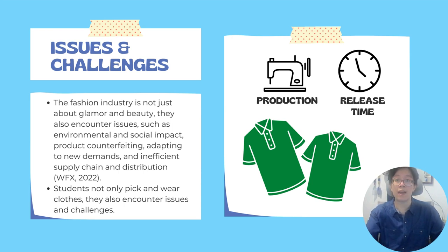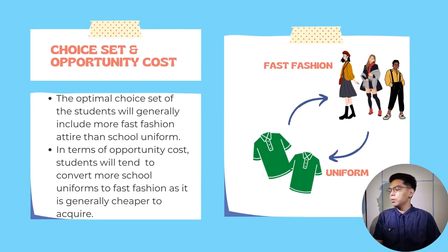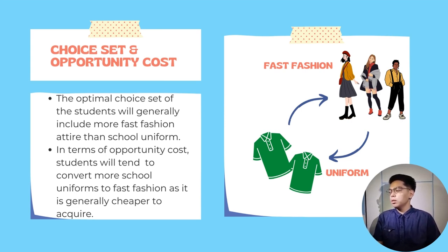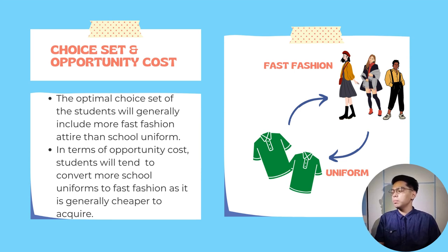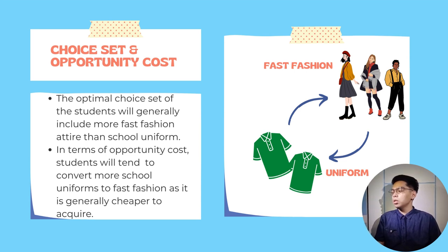In examining the choice set and opportunity cost of fast fashion versus school uniforms, we found that the optimal choice set of students will generally include more sets of fast fashion attire than school uniform sets. This is because fast fashion attire is generally cheaper than a set of school uniform. In terms of opportunity cost, students tend to trade more sets of school uniform for fast fashion attire, as its lower cost plays a significant role in this phenomenon.